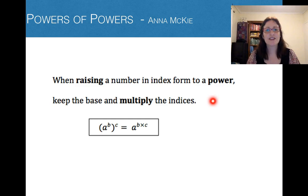When raising a number in index form to a power, you keep the base and multiply the indices or powers. So that looks like if we have a to the power of b and all of that is raised to the power of c, that's the same as keeping that base and multiplying those two powers together: a to the power of b times c. Let's put that into practice.